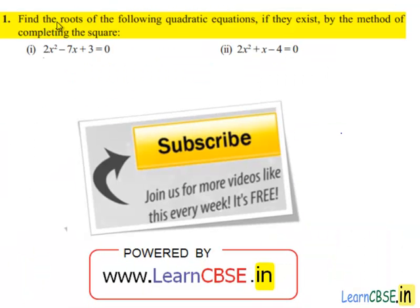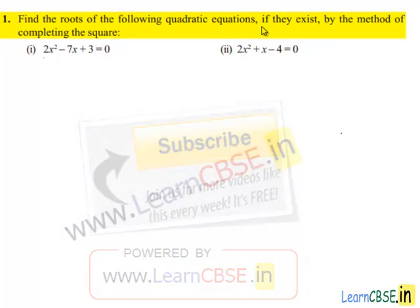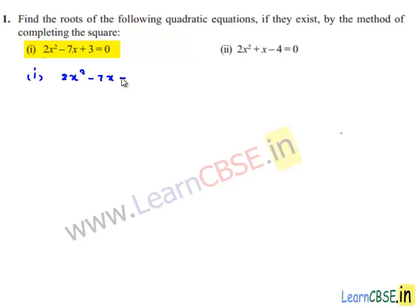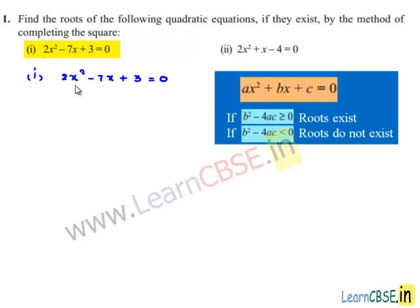Moving on to the first problem: find the roots of the following quadratic equations if they exist by the method of completing the square. The first equation given is 2x² minus 7x plus 3 is equal to 0. On comparing this equation with the standard equation ax² plus bx plus c equals 0, we get a is equal to 2, b is equal to minus 7, and c is equal to 3.